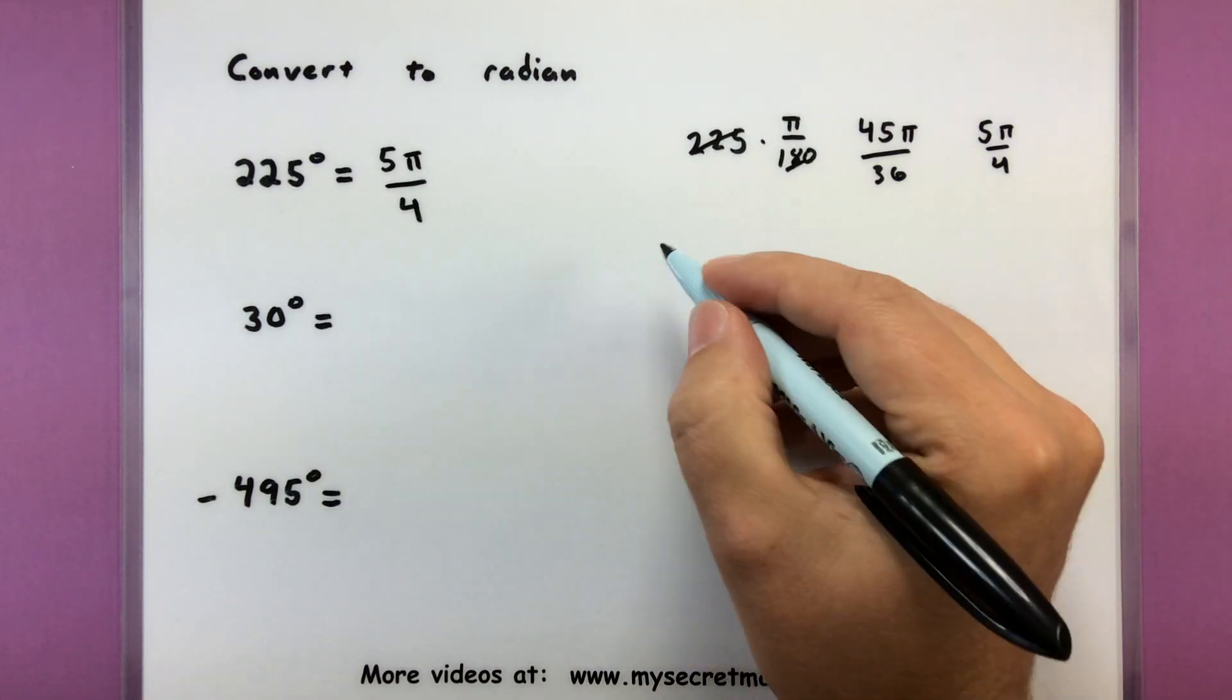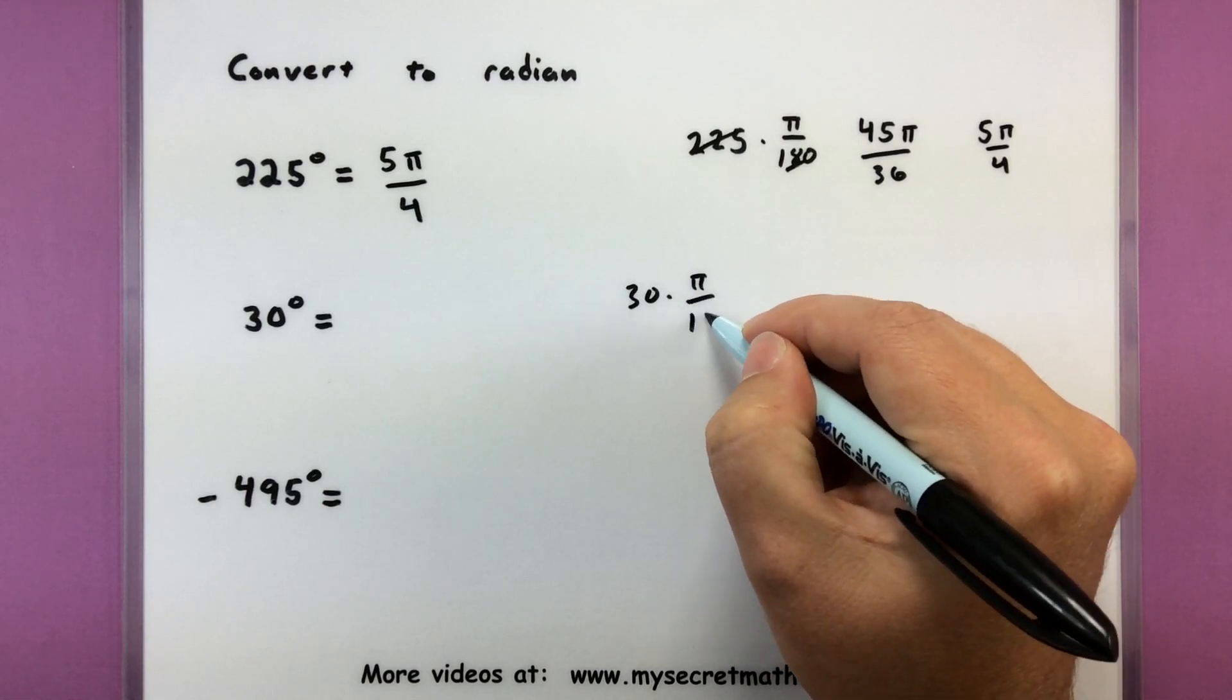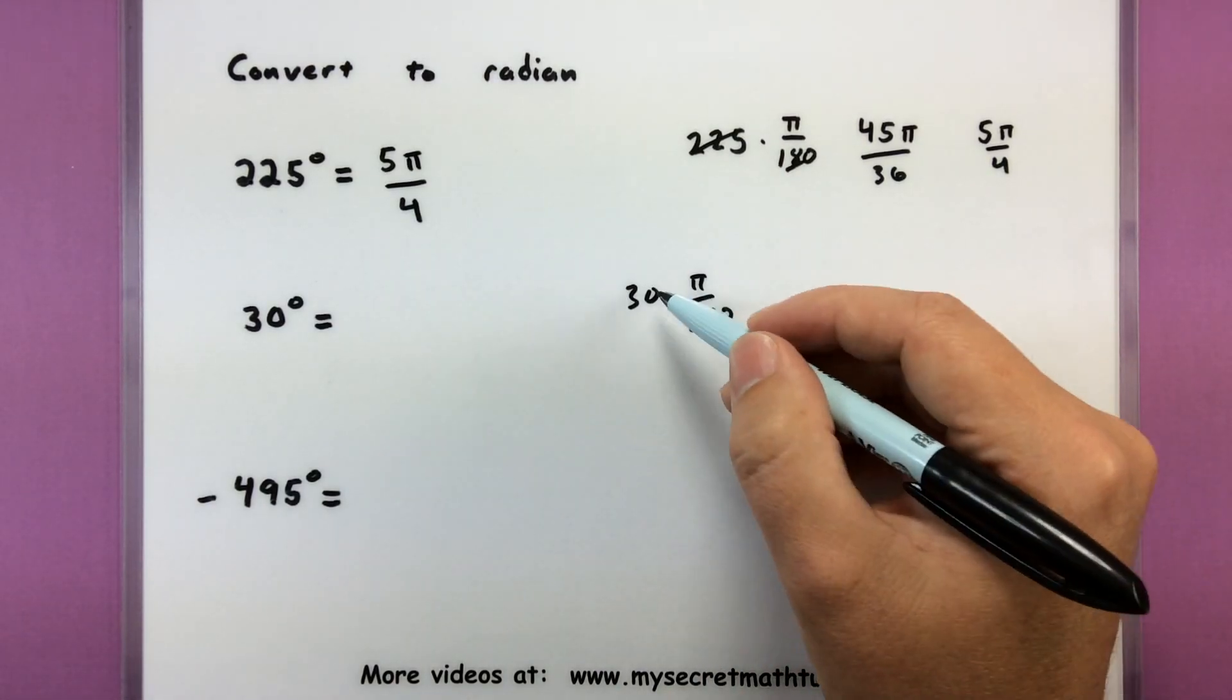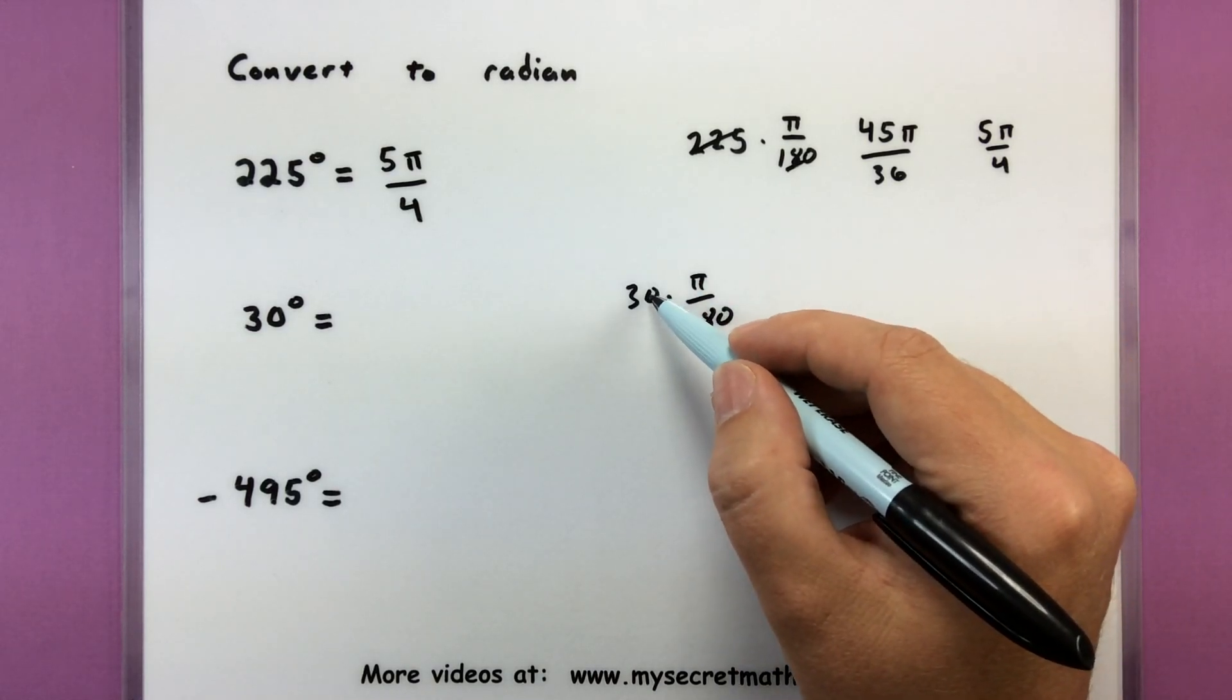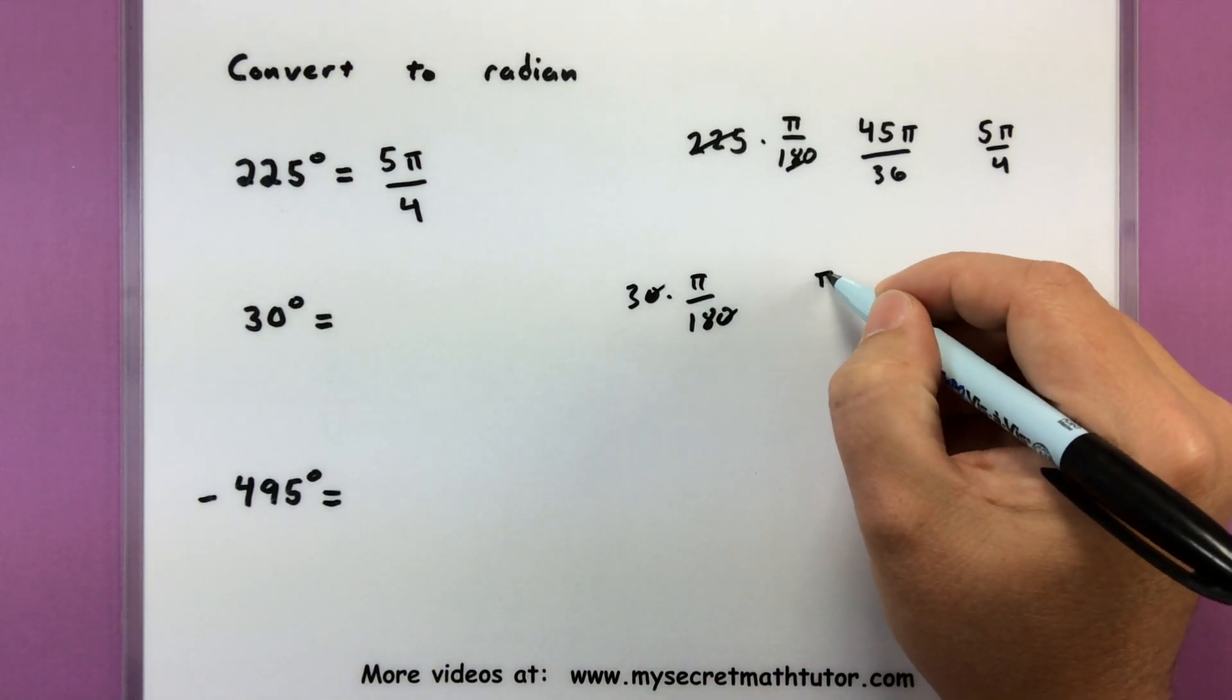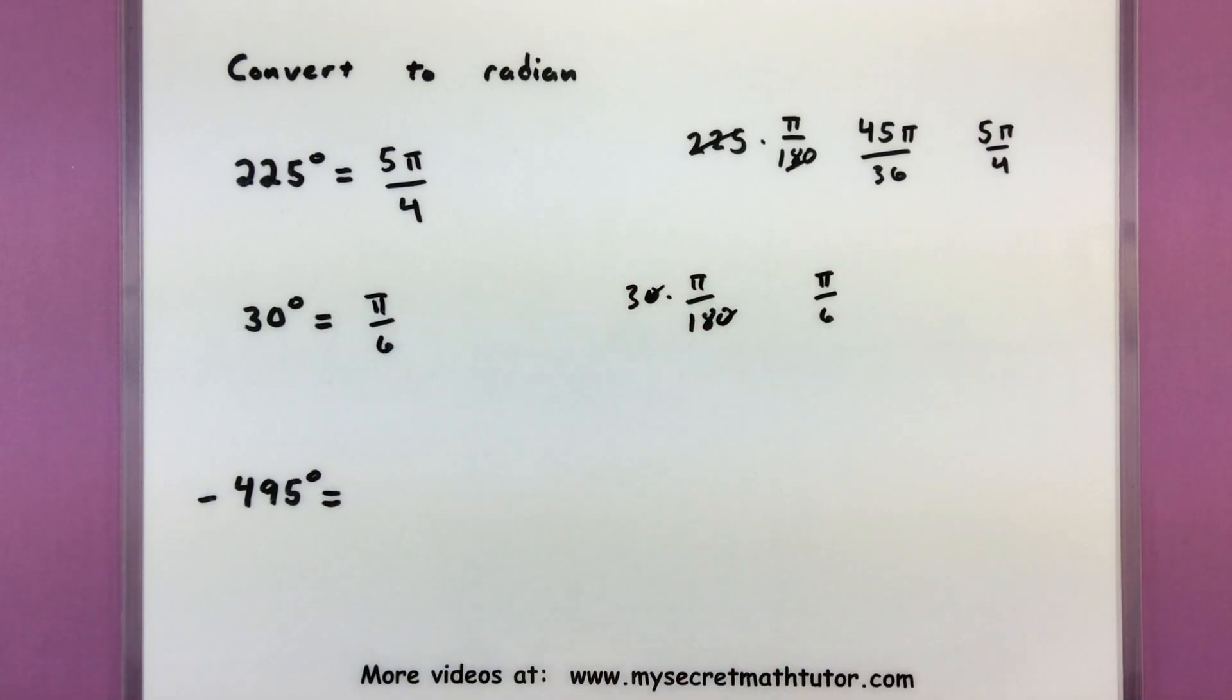Alright, moving on, 30 multiplied by pi divided by 180. Again, pi is not really going to cancel out, so we'll focus on these other numbers here. It looks like 10 goes into both of them. And then I can reduce the 3 and the 18, pi over 6, so there's our radian measure, pi over 6.